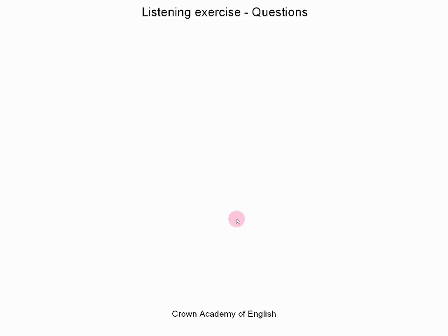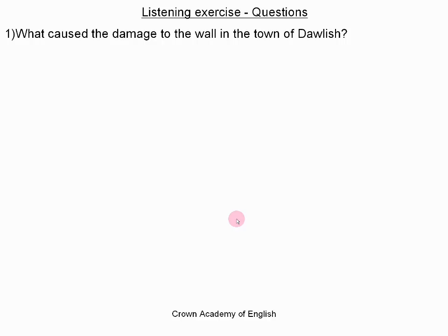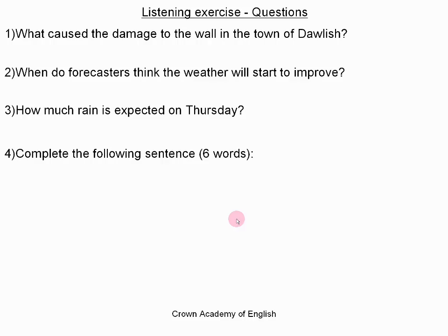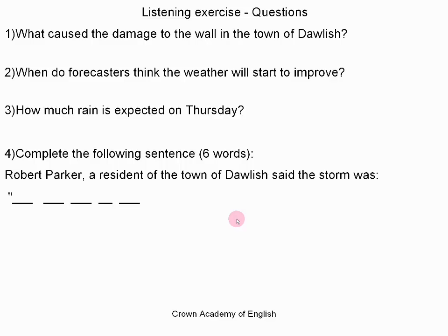So that is the end of the vocabulary. Now let me give you the questions. Question one: what caused the damage to the wall in the town of Dawlish? Question two: when do forecasters think the weather will start to improve? Question three: how much rain is expected on Thursday? Question four: I would like you to complete the following sentence — there are six words which I would like you to find. The beginning of the sentence is: Robert Parker, a resident of the town of Dawlish, said the storm was... and I want you to find the six words that he says.